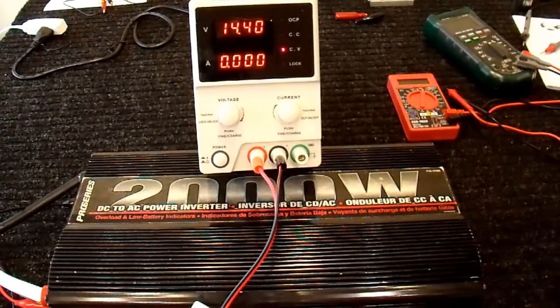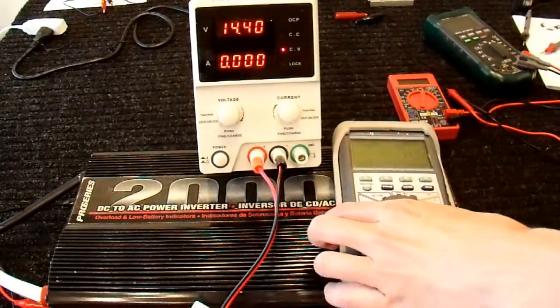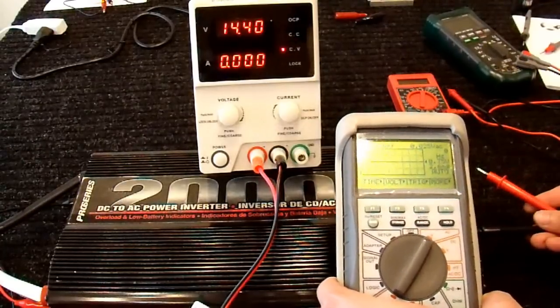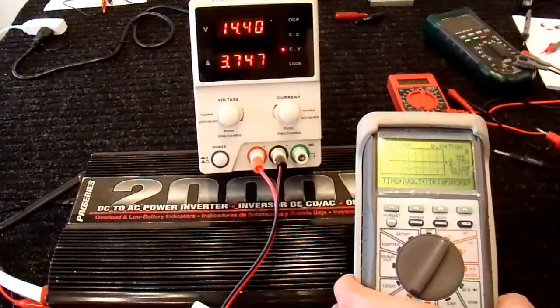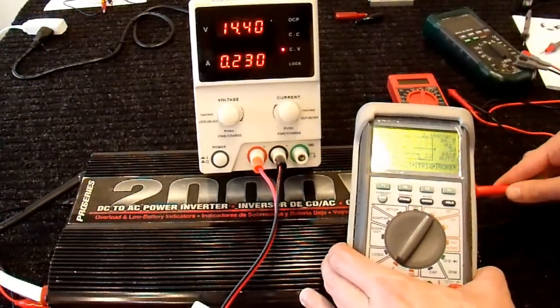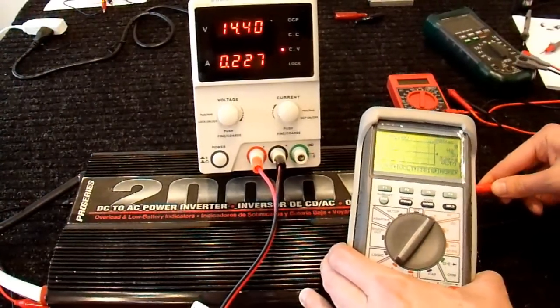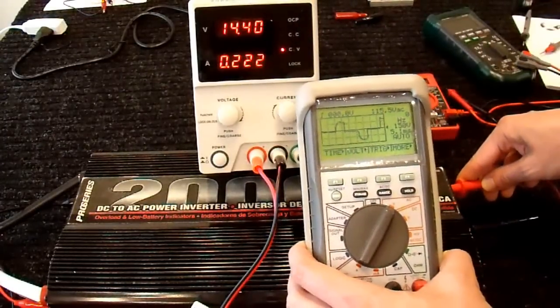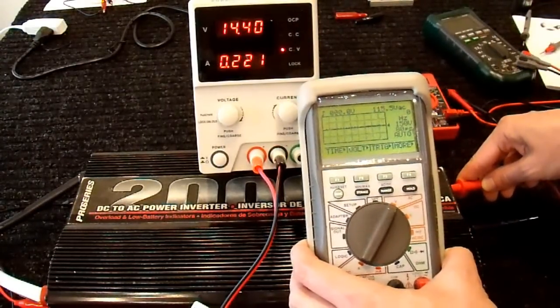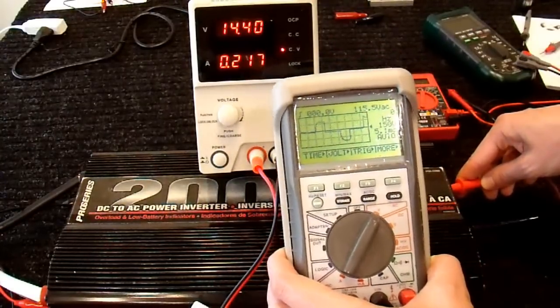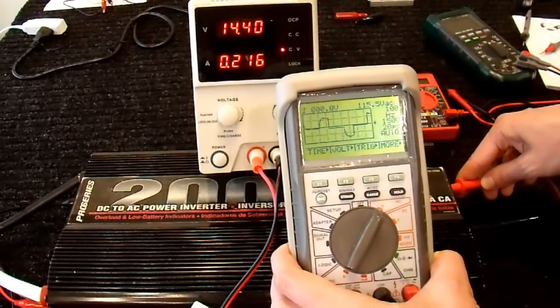Alright, I have the other inverter hooked up again, just like before, except this time I have a true RMS multimeter. And we'll see what this one reads. Turn it on. And plug in my test leads. And there we go. It's 115 volts. This inverter works just fine, but if I use a non-RMS multimeter, it reads the wrong voltage.